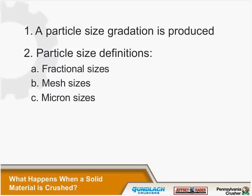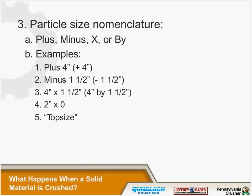When we crush a solid particle, a whole range of sizes is produced, and this is important because it's not always taken into account. We can define these particle sizes in several ways: as fractions such as a quarter inch or two inch, by mesh sizes such as four mesh, or by micron sizes — more of a metric designation used to describe the size of particles.